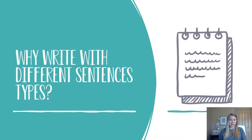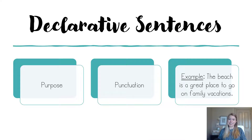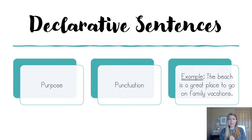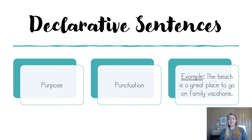Let's dive in with the first one: declarative sentences. The purpose of a declarative sentence is to make a statement or to tell information, and the punctuation that goes at the end is what you're most used to — it is a period. So declarative sentences: purpose is to make a statement, punctuation is a period. An example would be: the beach is a great place to go on family vacations.